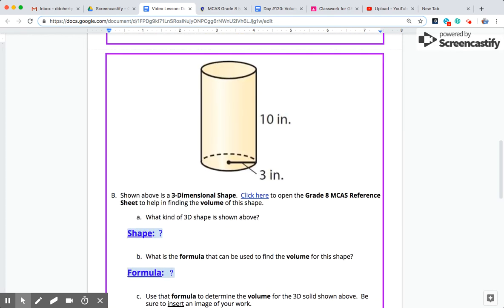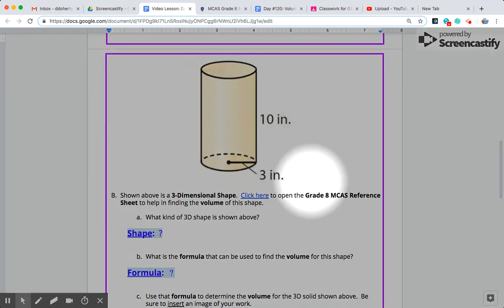Part B, the second part of your exploratory problems today, tells us that shown above is a three-dimensional shape, a figure with width, depth, and height. And we're going to have to again open up our MCAS reference sheet as we're working with volume for any of these three-dimensional shapes. We're asked what kind of shape is shown, and what formula could be used to find the volume for this shape.